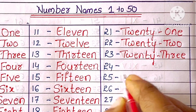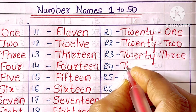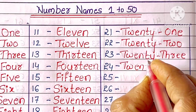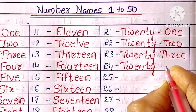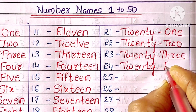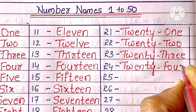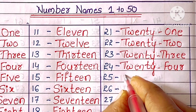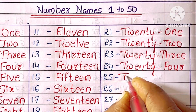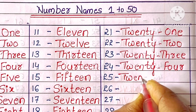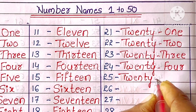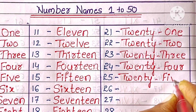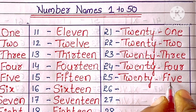24. T-W-E-N-T-Y-F-O-U-R. Twenty-four. 25. T-W-E-N-T-Y-F-I-V-E. Twenty-five.